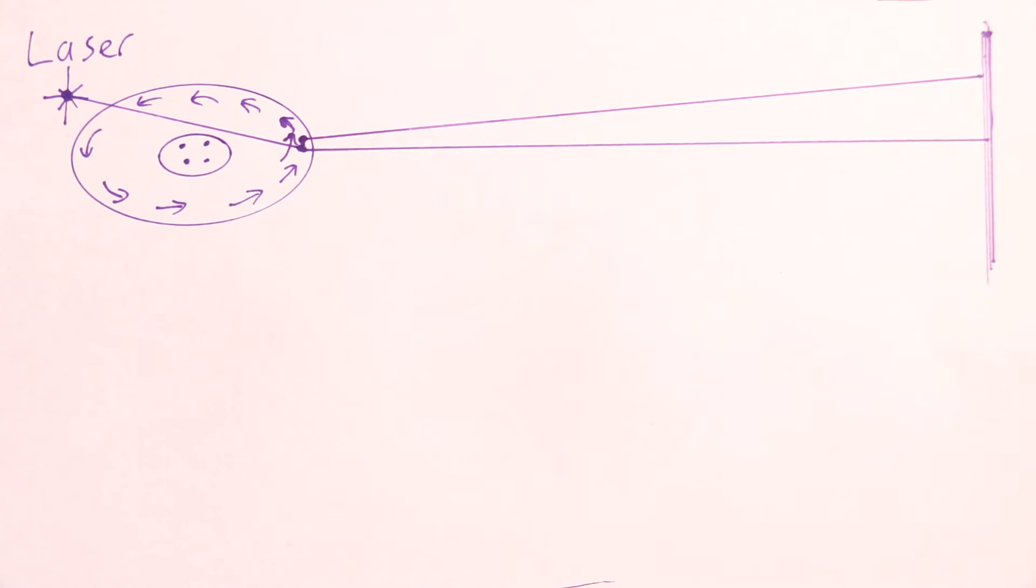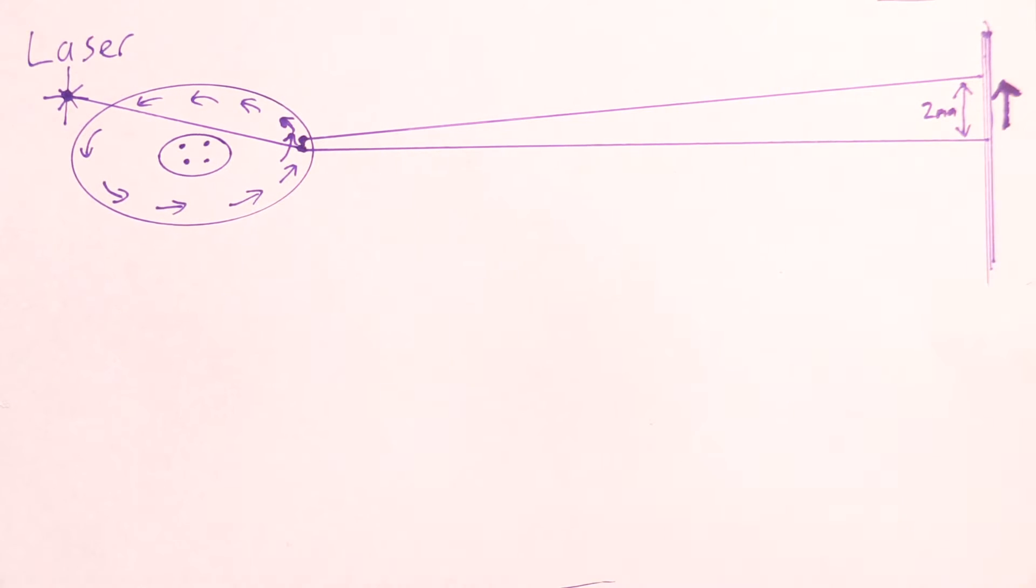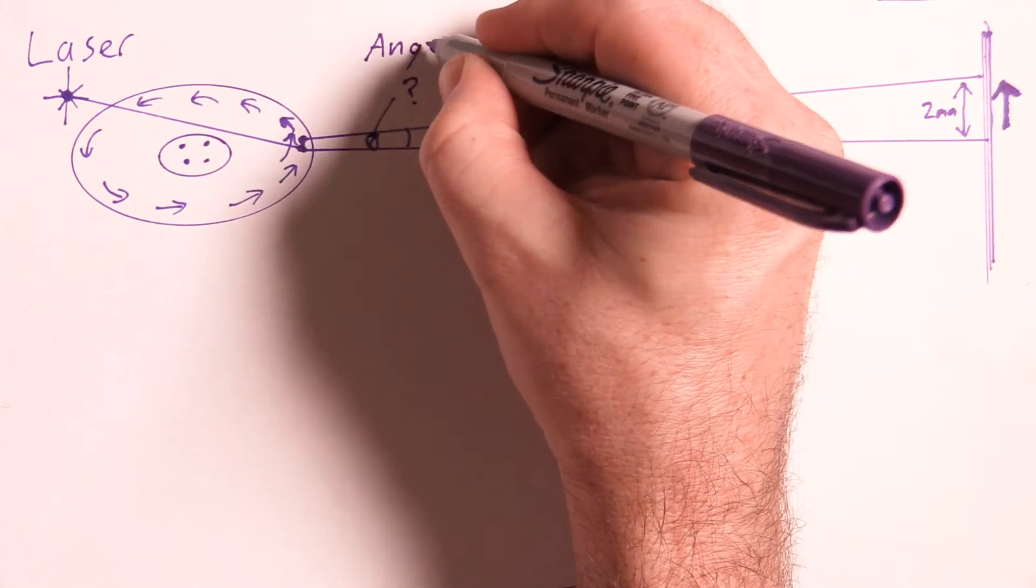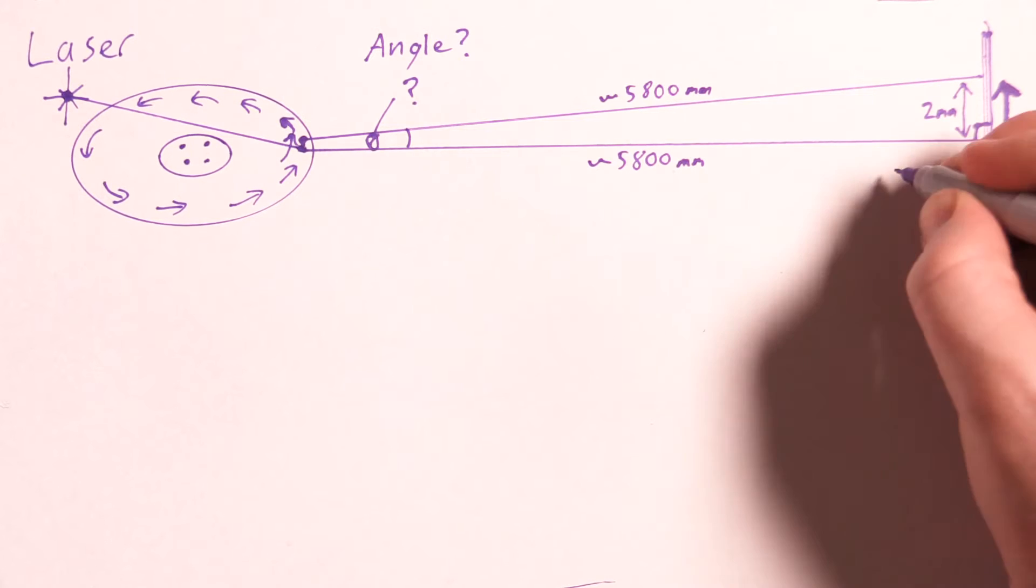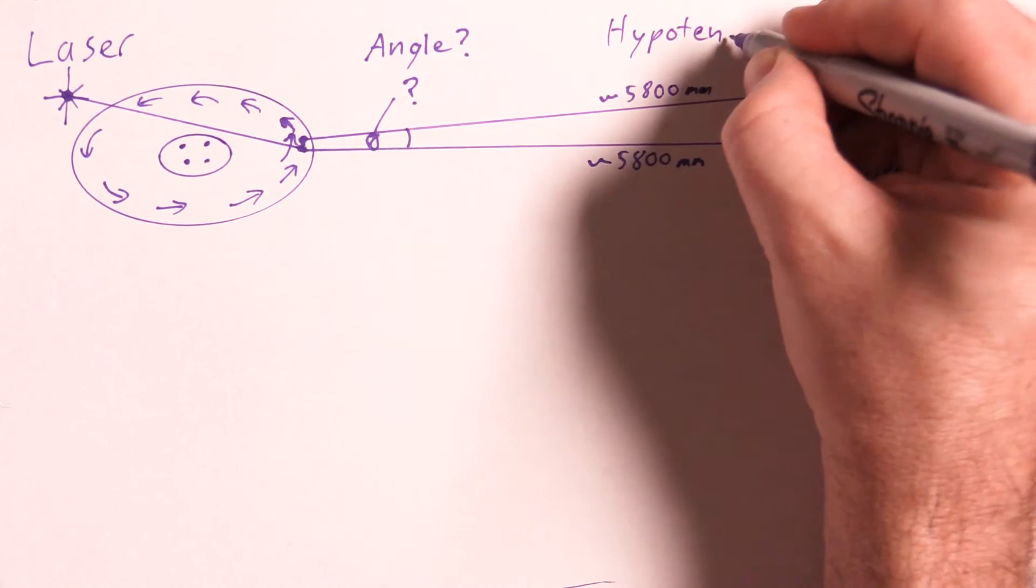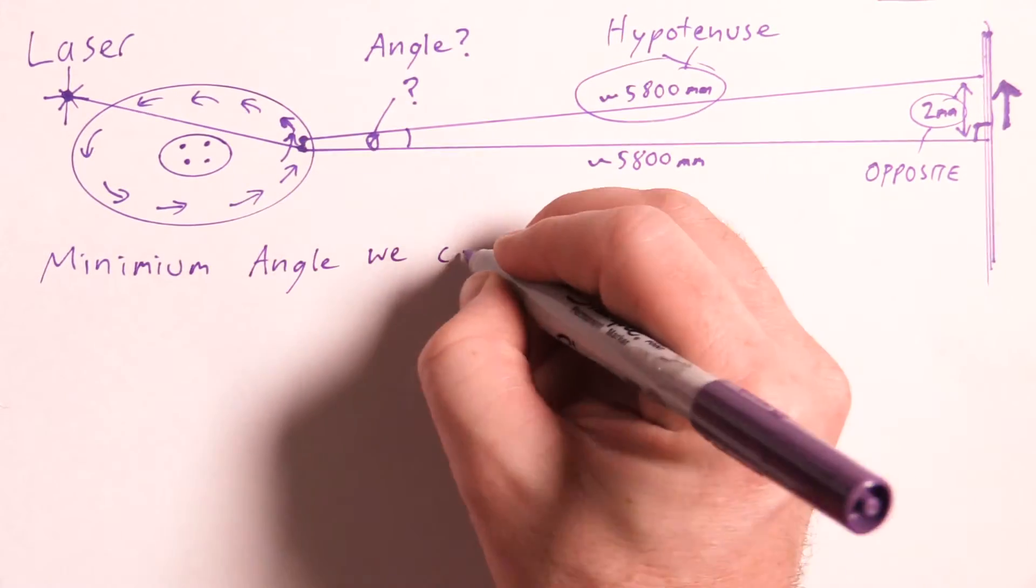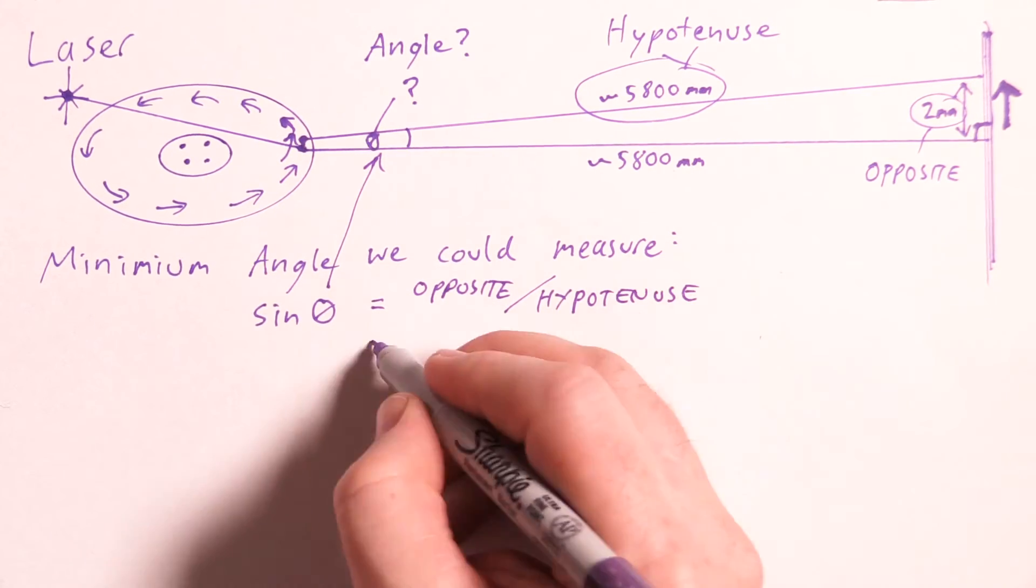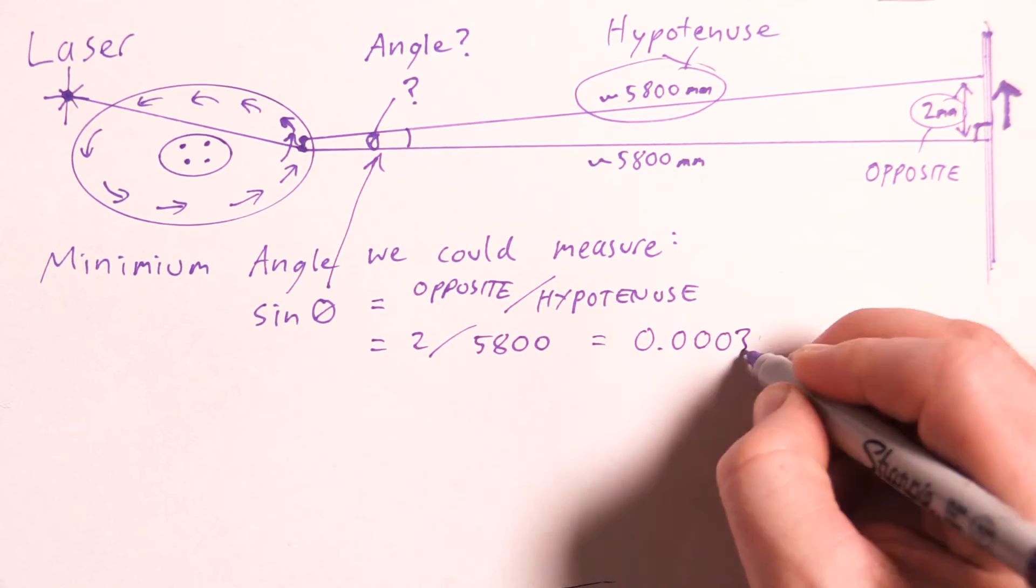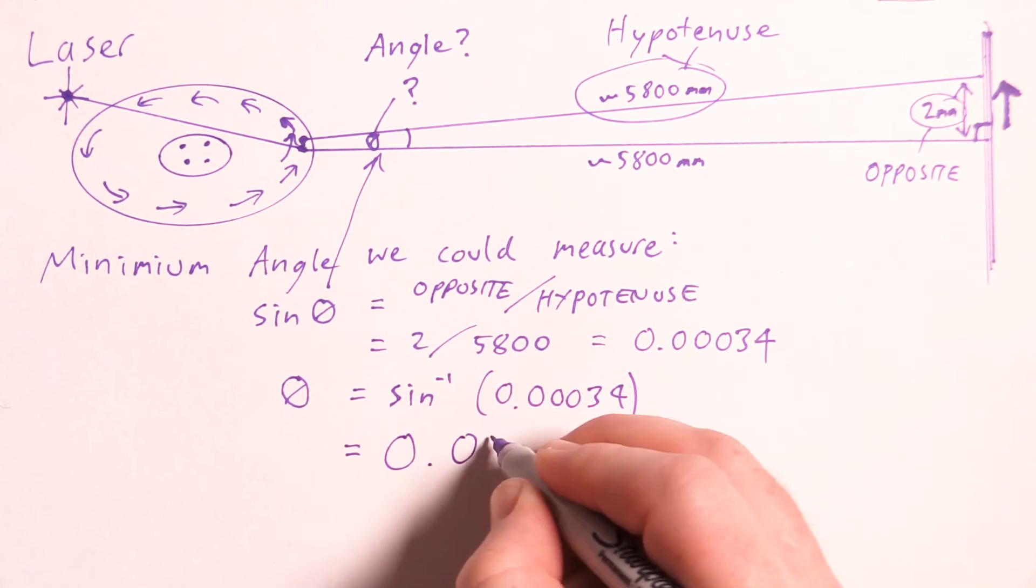To work out the minimum rotation angle that I could measure from the 2mm estimation I've used some trigonometry based on the distance from the hard drive to the wall. So basically this setup forms a very thin right angle triangle with the laser beam, the wall, and the possible distortion path forming the sides. To work out the minimum angle that I could measure I've used the formula sine angle equals opposite over hypotenuse. Then I've used inverse sine to determine the angle. So the minimum rotation angle that I could measure is 0.02 degrees.